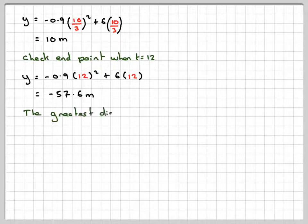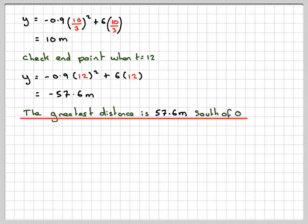So, in order to answer the question, the greatest distance is 57.6 metres south of the origin. I hope this video shows you how to find the furthest distance given a displacement function. I hope you have understood, and thank you very much for watching.